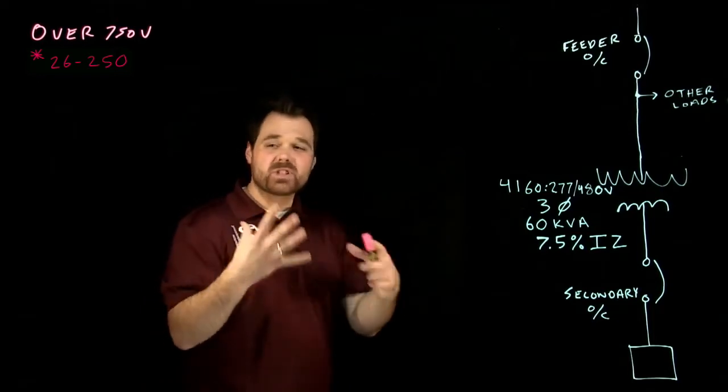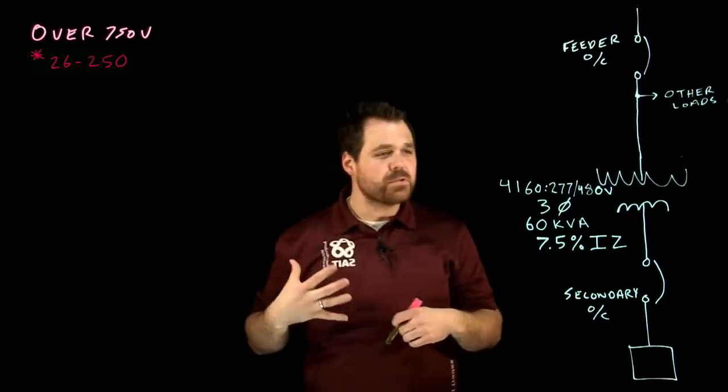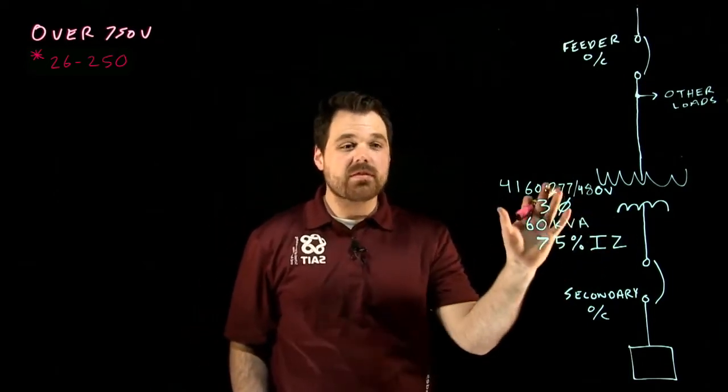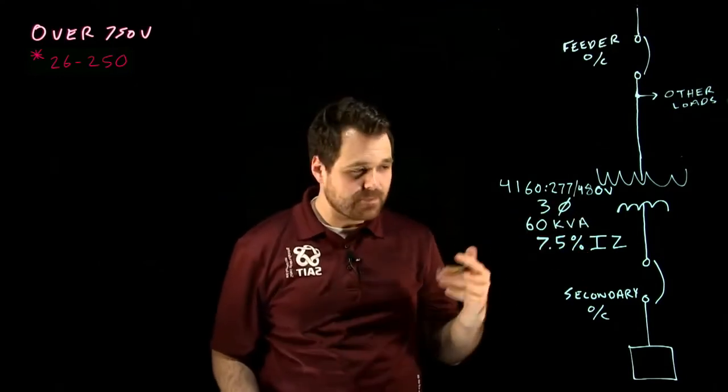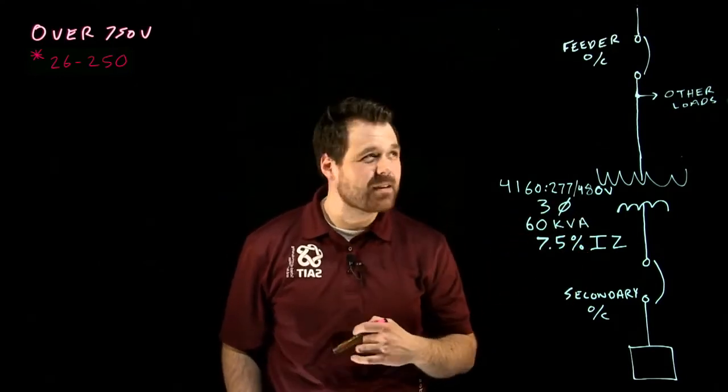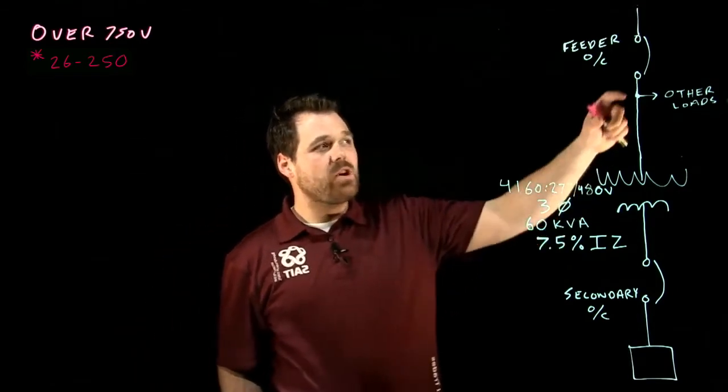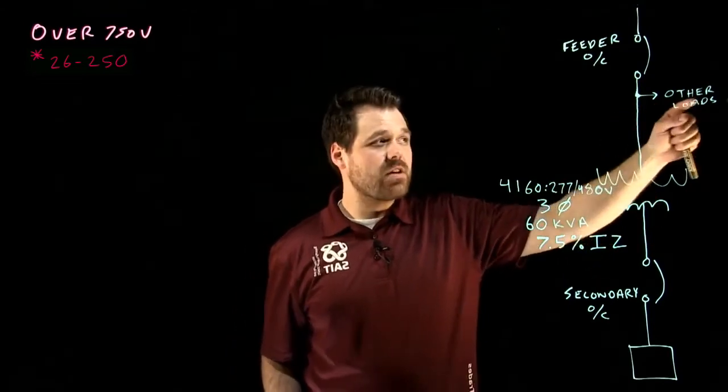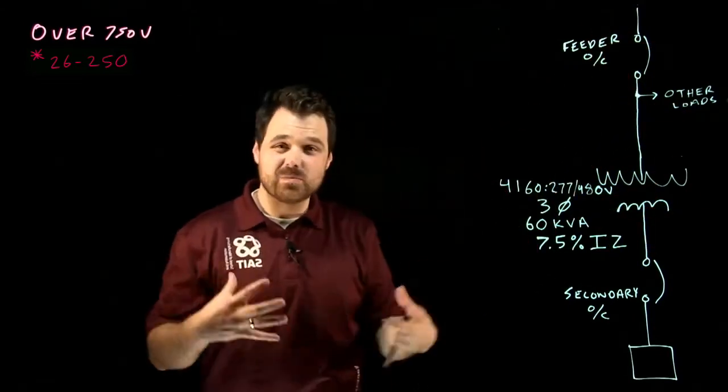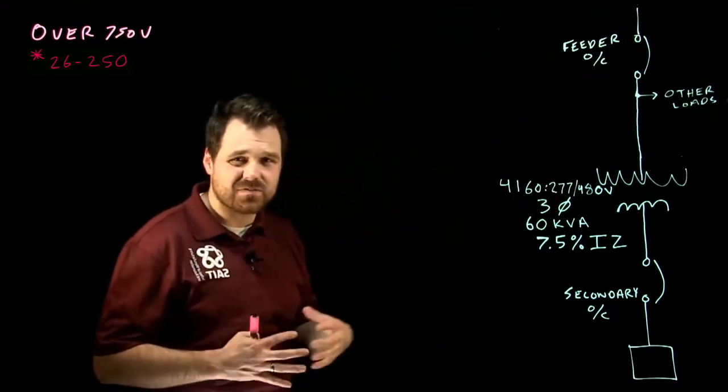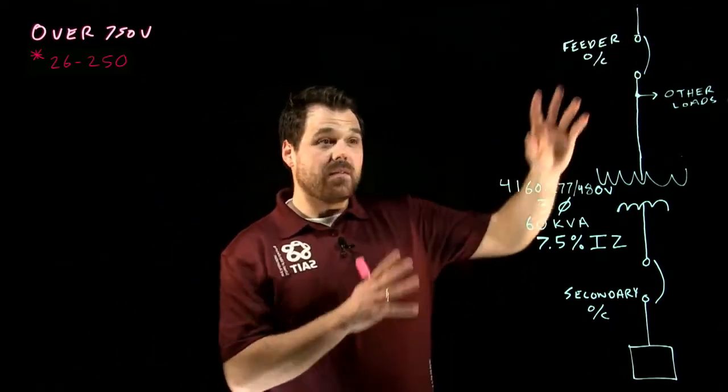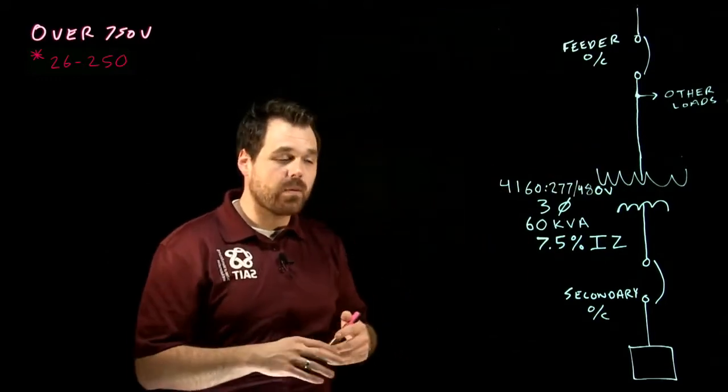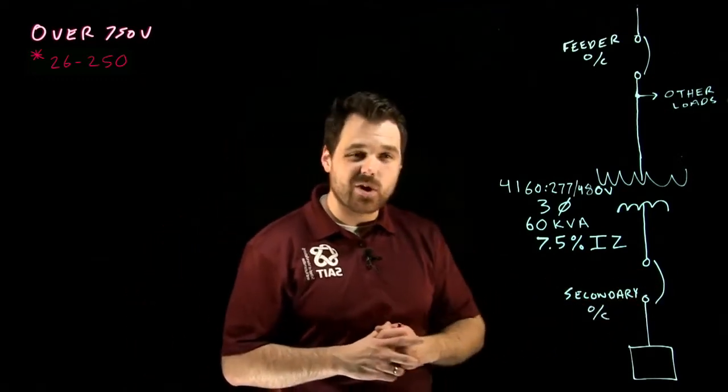In this situation right here, we're going to deal with all 26,252. We're dealing with a 4160 to 277/480, three-phase transformer, 60 kVA, with a 7.5% IZ. In this situation here, we've got a feeder overcurrent which is protecting this transformer as well as other loads. We want to make sure that this feeder overcurrent isn't too big, so it still provides us with the appropriate short circuit protection for our transformer. If it doesn't, we may need to add an individual primary overcurrent protection for the transformer.